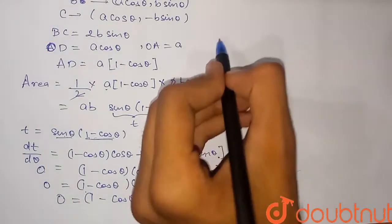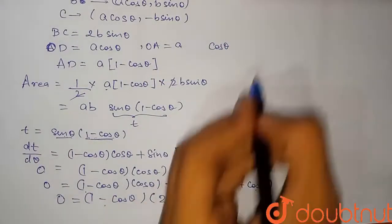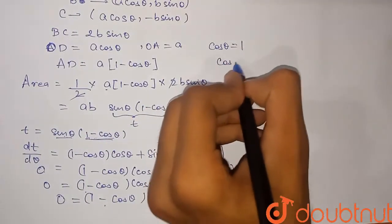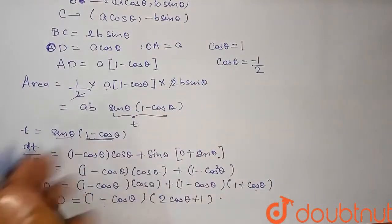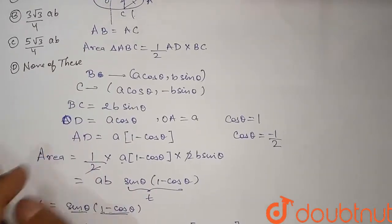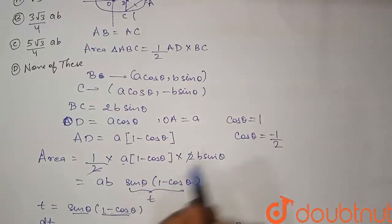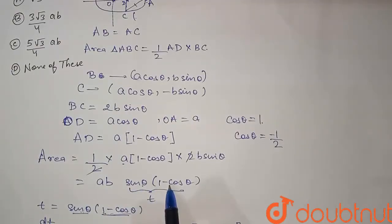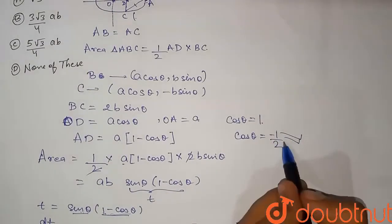From (1 − cosθ)(2cosθ + 1) = 0, we get cosθ = 1 or cosθ = −1/2. If cosθ = 1, the area = ab · sinθ · (1 − cosθ) = 0, which cannot be a maximum. So the relevant solution for maximum area is cosθ = −1/2.